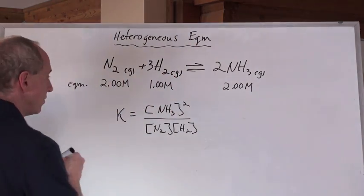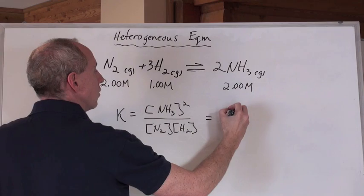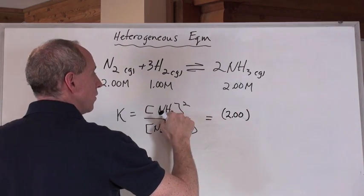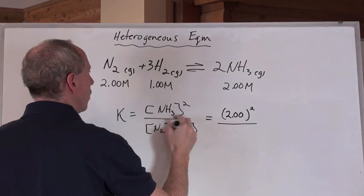So, what do you do here? Quite simply, if you're given the equilibrium concentrations, plug them in. So, it's 2.00 for the concentration of the NH3, but it's squared, and don't forget to take all of those numbers.